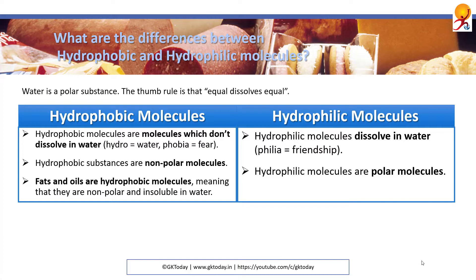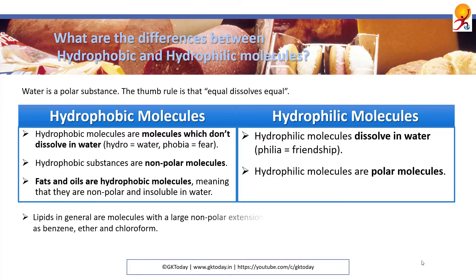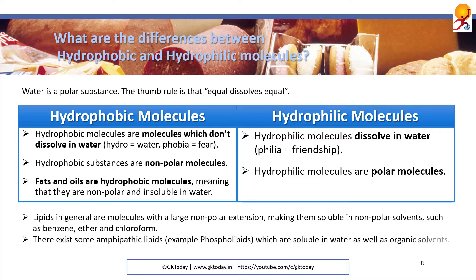Examples of hydrophobic molecules would be fats and oils. Lipids in general are molecules with a large nonpolar extension which makes them soluble in nonpolar solvents such as benzene, ether and chloroform. There also exist some amphipathic lipids, an example of which is phospholipid, which are soluble in both water and organic solvents.